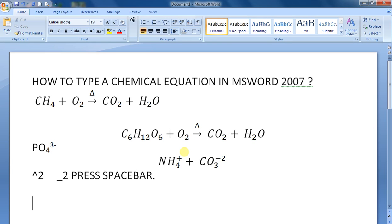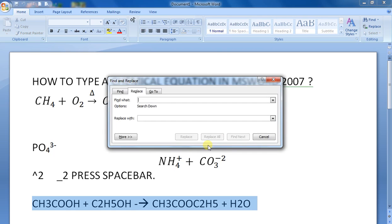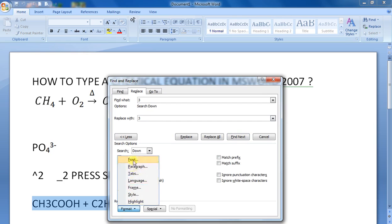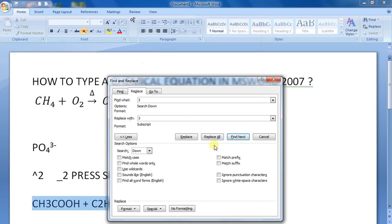Otherwise we can do it easily like this: just type the equation, keep typing numbers continuously. Then select everything, press Control+H. Type the number you want to format, like 3. Click More, go to Format, select Subscript, OK, then Replace All.